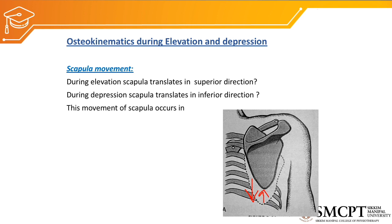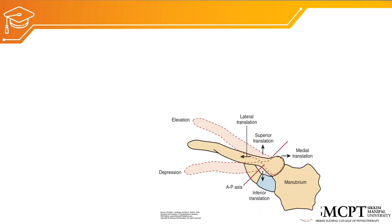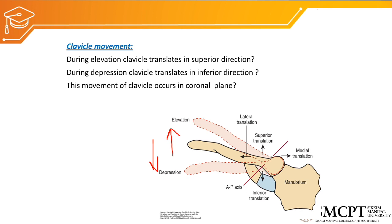This movement of the scapula occurs in which plane? It occurs in the coronal plane. The movement of the clavicle during elevation and depression is the same as the scapular movement, and the clavicle also moves in the coronal plane. The range of motion of this movement is about 15 degrees in each direction — that is elevation of 15 degrees and depression of 15 degrees, adding up to 30 degrees of movement.